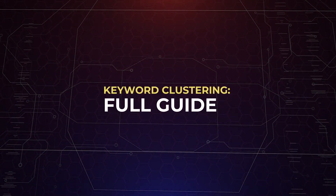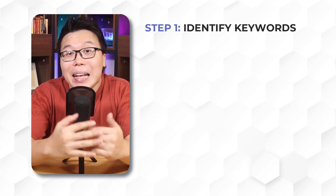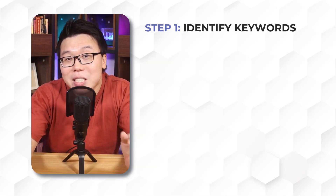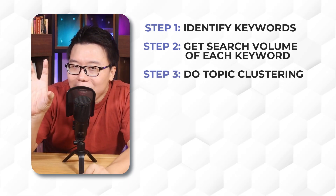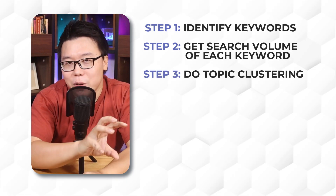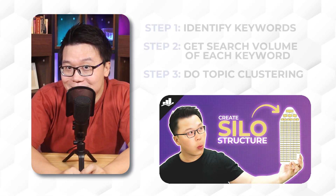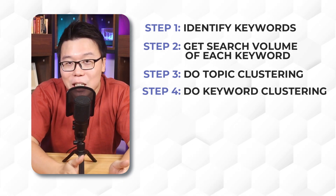So let's recap. The first step to everything is to identify keywords. This is a step where you want to generate as many keywords as possible without worrying about search volume. Then, once you have a long list of keywords, put them into Google Keyword Planner to get the search volume data. Then, selecting only the keywords with search volume, you want to group the keywords into different blog categories. We recommend that you watch the Silo Structure video to understand more about it.